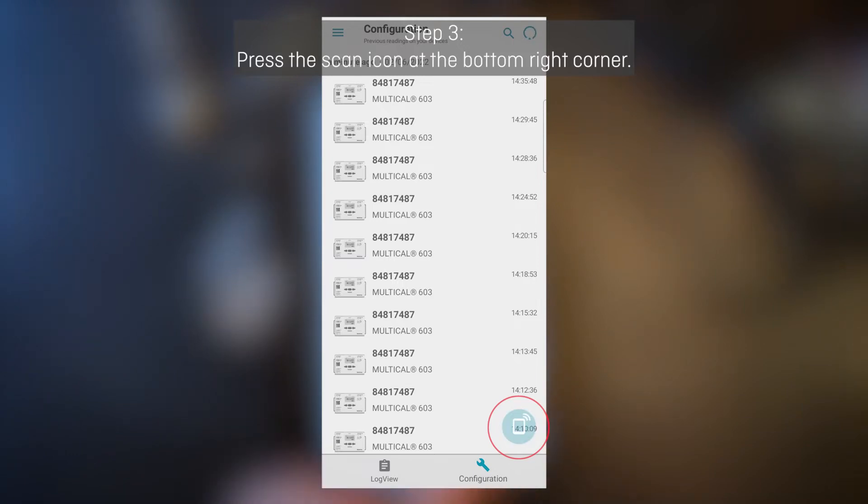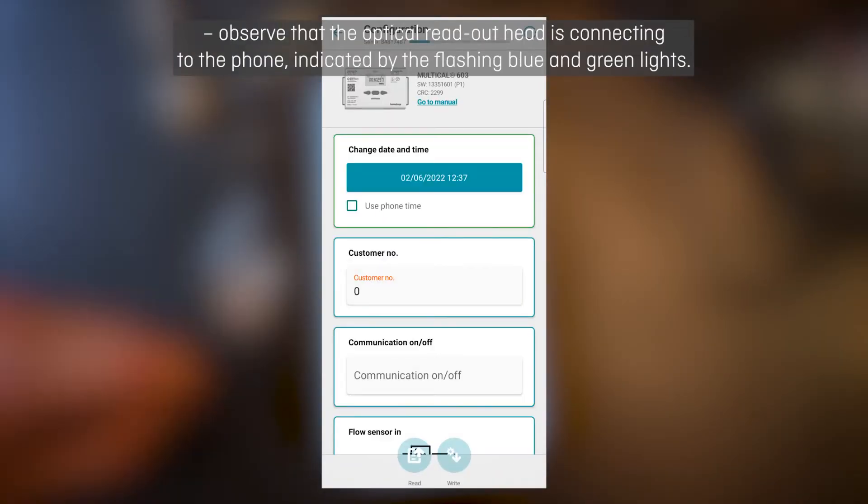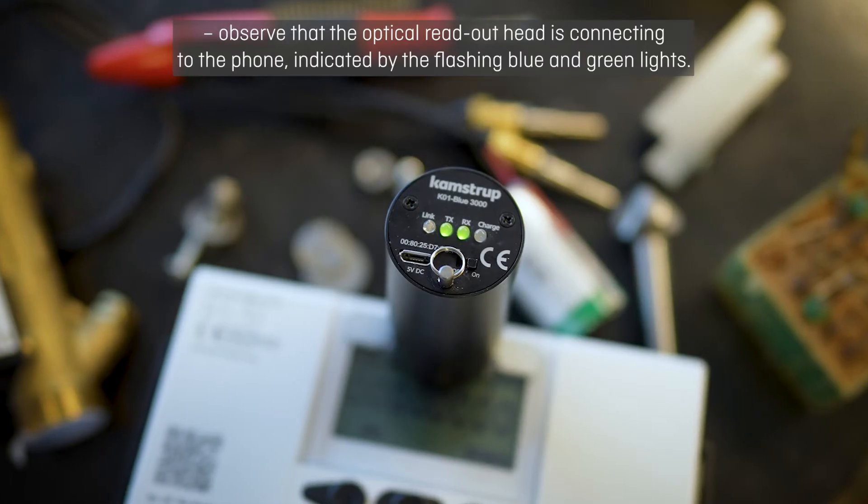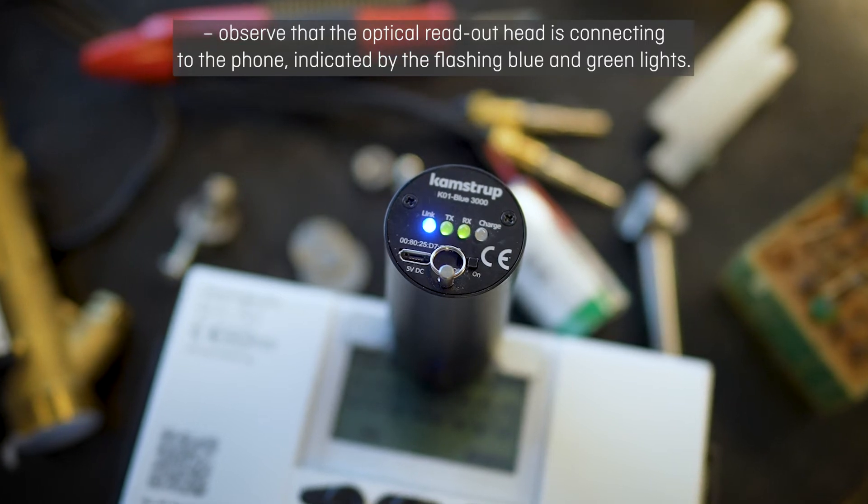Step 3. Press the scan icon at the bottom right corner. Observe that the optical reader head is connected to the phone, indicated by flashing blue and green lights.